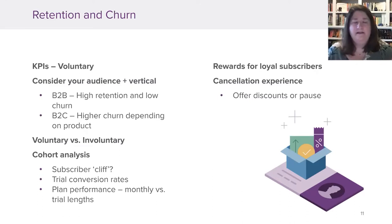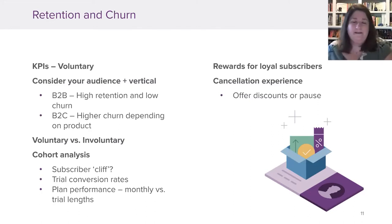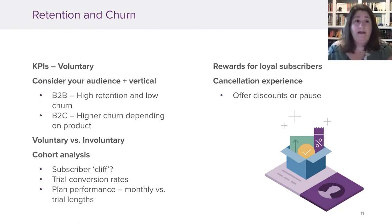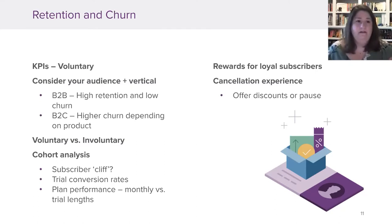A company that handles the cancellation process really well is Sling. When you try to cancel your Dish digital subscription, they put you through a multi-stage process asking why you're canceling — price, not using it, don't have the shows — which gives them great data as a business. Then they offer you the option to just pause. It's a multi-stage process that really makes you think about it, while still being easy to do and gathering useful data — it's a good experience.